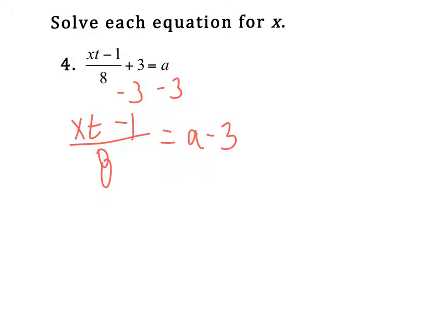Now I'm going to try to get rid of this fraction. So the opposite of dividing by 8 would be to multiply both sides by 8. And when I do that, I have to make sure the whole right side gets multiplied by 8. So now I have x - 1 equals, and let's just distribute that, 8a minus 24. Keep working. So now it's just like I've got a number multiplied to x and a number subtracted. So if I had an equation like that, I would add 1.